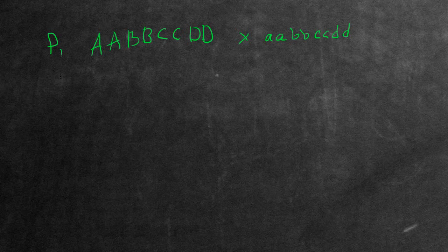This is called the parent generation, or P1. What the problem is asking for is F2. So to figure out F2, first we need to figure out F1.